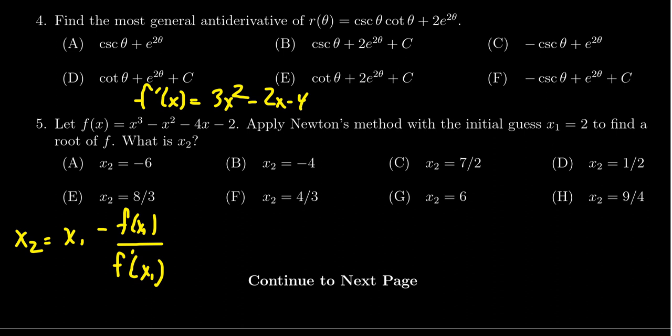And so x₁ is 2, so we need to plug those into Newton's formula. We're going to get 2 minus, evaluate the function at 2. So we get 2³ which is 8, minus 2² which is 4, minus 4 times 2 which is 8, minus 2.